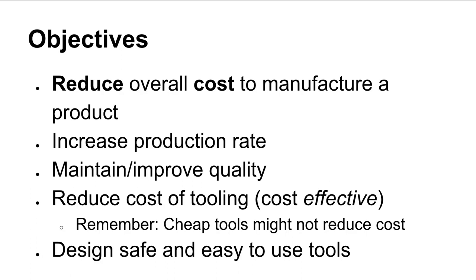The goal of tool design — the reason you would do it at its core — is to reduce cost: the overall cost to manufacture a product. Sometimes that involves increasing the production rate, but not always. You might have a production line producing a thousand widgets per shift, and making one subprocess faster may or may not help, depending on whether it's the bottleneck. Everything should really be balanced.